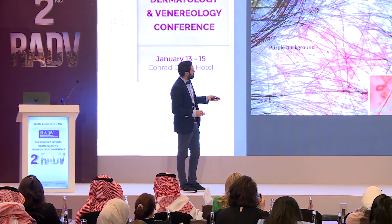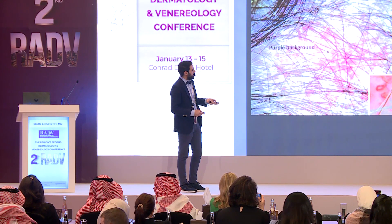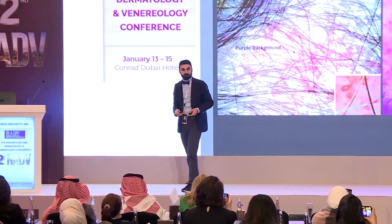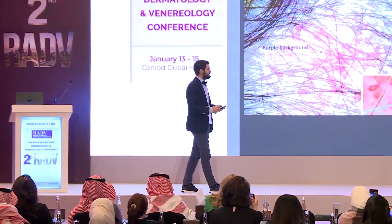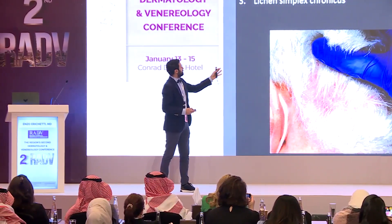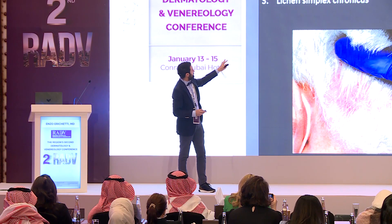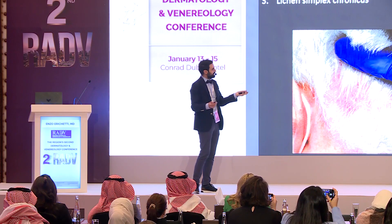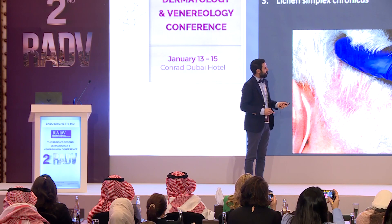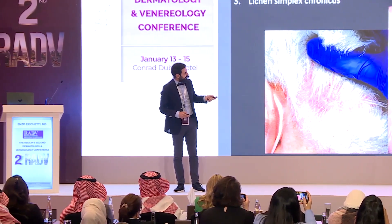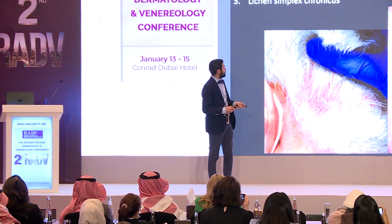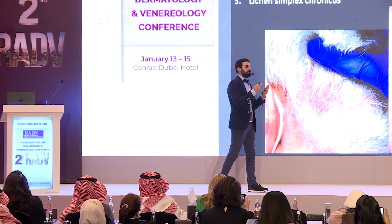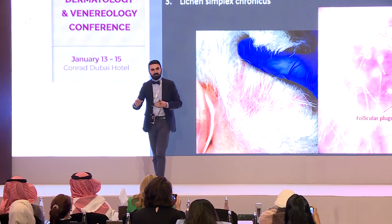In scalp dermatomyositis we may also appreciate tortuous vessels that look like the vessels we can appreciate on the proximal nail fold — but this is visible at higher magnification. Another case: psoriasis, discoid lupus, or lichen simplex chronicus? We have follicular plugs, so it's not psoriasis. We have broken hairs and broom-like hair. But we do not see the dotted vessels typical of lichen simplex chronicus, so this is more likely discoid lupus erythematosus.